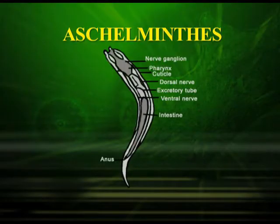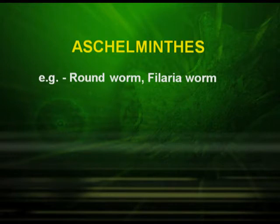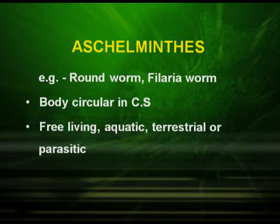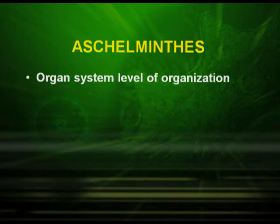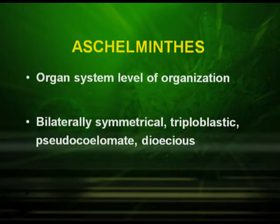The next phylum is Aschelminthes, which includes the roundworms and the filarial worms. Their body is circular in cross-section. They are aquatic, free-living, terrestrial, or parasitic. They have the organ system level of organization. These organisms are bilaterally symmetrical, triploblastic, pseudocoelomate, and dioecious.